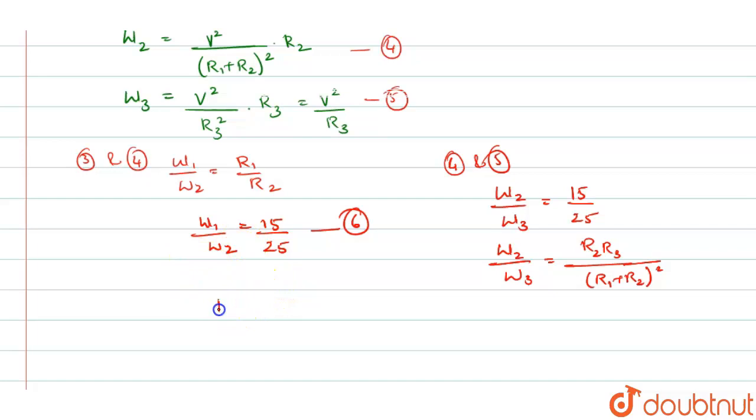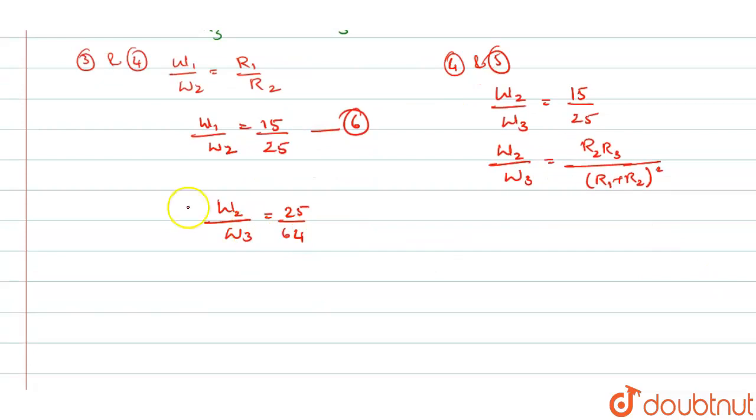You will get the equation as W2 by W3 is equal to 25 by 64 and with all these, by comparing all the three results, you can write it as W1 is to W2 is to W3 is equal to 15 is to 25 is to 64.